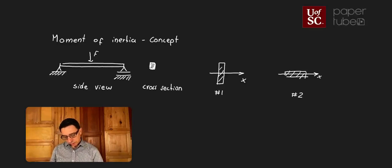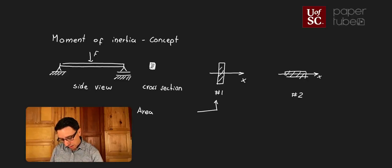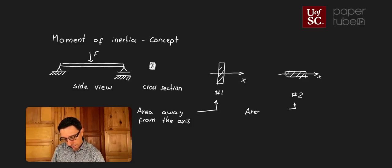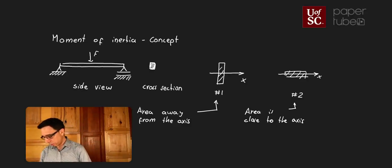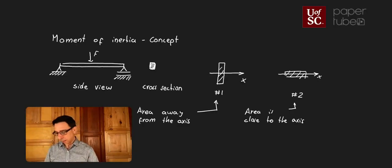In case number one, most of the area is away from the x-axis — the axis about which it's going to try to bend — and that creates greater resistance. In case number two, the area is close to that axis. So what we're learning is that the more the area is distributed away from that axis of bending, the more resistance you're going to have to bending. That's one of the key lessons.